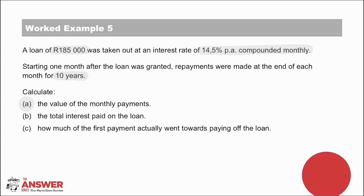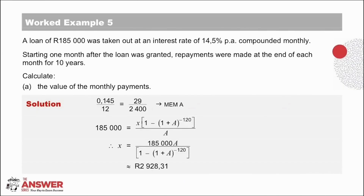Let's be reminded of what part B was asking: the total interest paid on the loan. Pause and give part B a try. And in part C, they want to know how much of the first payment actually went towards paying off the loan. Pause to give part C a go. Now let's look at the solution for part A. Use the memory for the monthly interest rate. Monthly payments for 10 years means 120 payments. The loan value is R185,000. Solving for X gives R2,928.31.